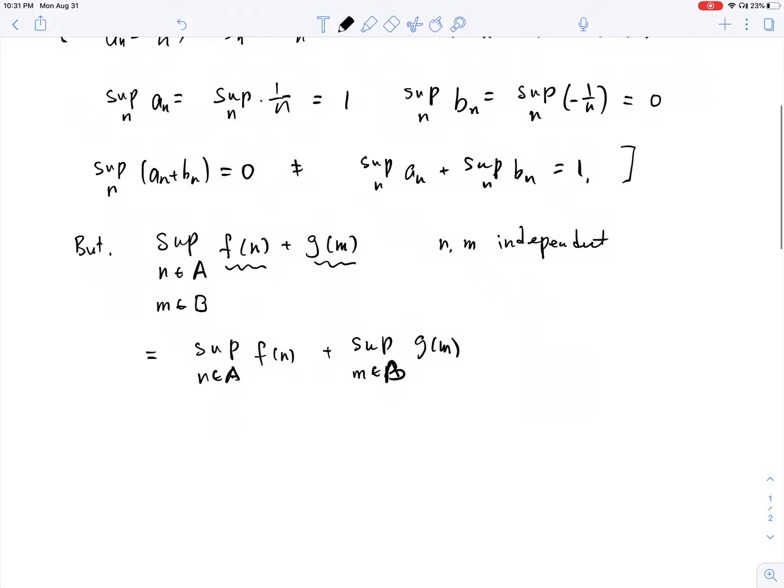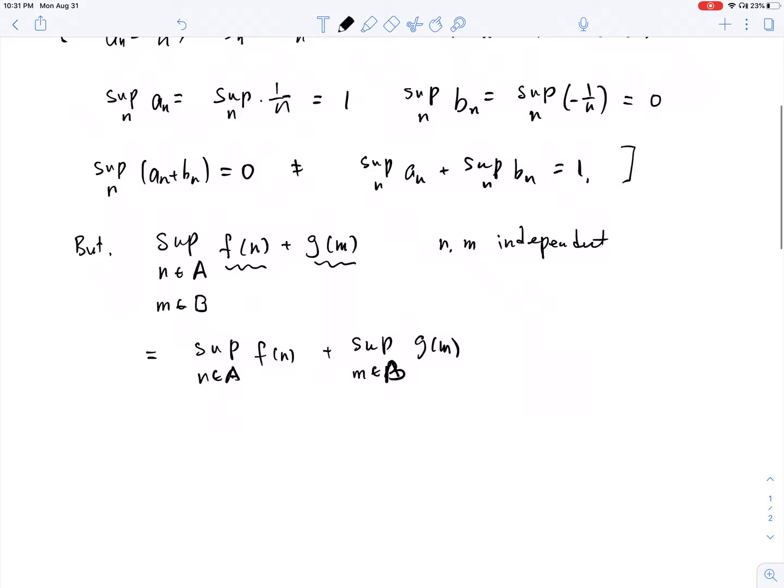Another situation we can take the supremum inside is one of them is constant. This is always true. Supremum over n, if you have an over here, say minus l, and if l is a constant, then this is going to be supremum n, an minus l, that's going to be fine. And here, if l is a constant, is a constant.